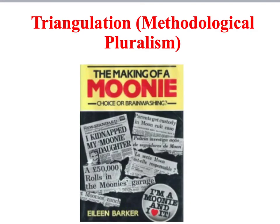Eileen Barker's study of the religious cult of the Moonies is a good example of triangulation. In this study, she investigated the group using observations, questionnaires and interviews.